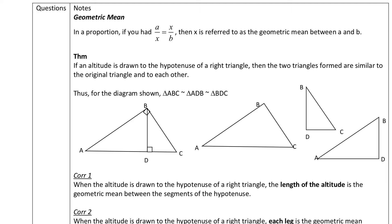The geometric mean is, of course, an average because we have the word mean, but it's more of a central tendency. X over here would be our geometric mean, and in order to solve this, our geometric mean equation would simply be X squared equals A times B. So X would be the square root of AB — that's our geometric mean between two numbers.